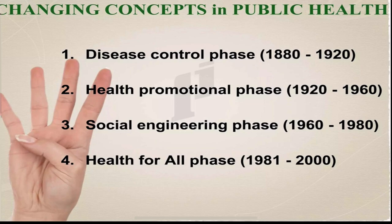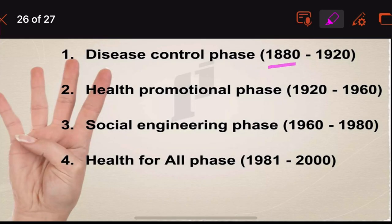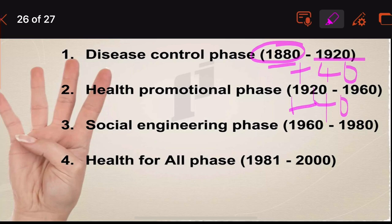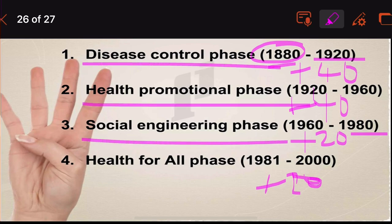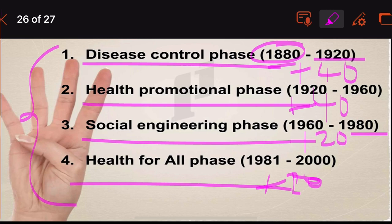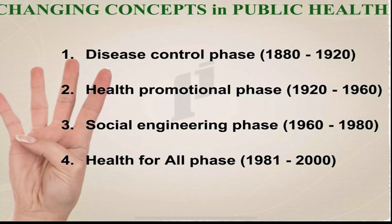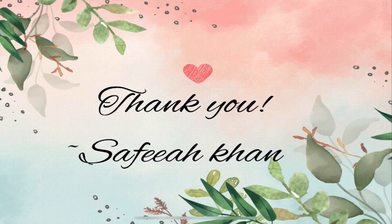To remember the dates of these phases: 1880, plus 40 years is 1920, plus 40 years is 1960, plus 20 years is 1980, plus 20 years is 2000. These four phases have been dealt with in another video which you can watch to understand in detail about the concepts of health.